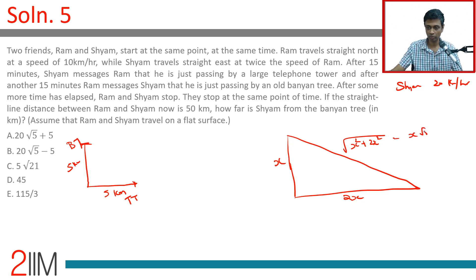This is X√5. X√5 is 50, so X is 50/√5, which equals 50√5/5, which is 10√5.